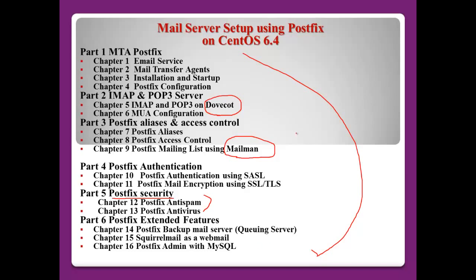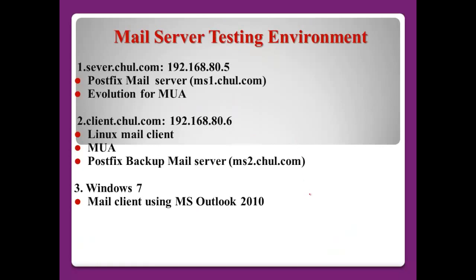This is part one showing how to set up a mail server using Postfix. The lab setup is like this: first, server.chall.com with IP address ending in .80.5 — this will be the Postfix mail server, and the mail server name will be mailserver1.chall.com.